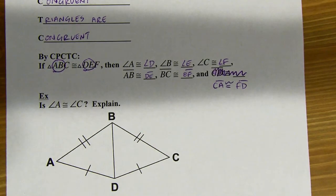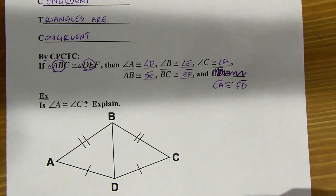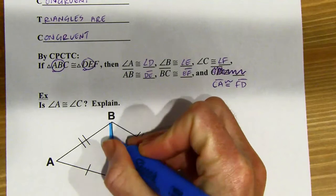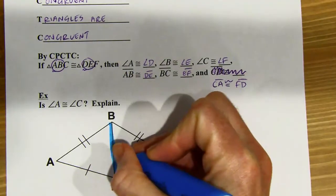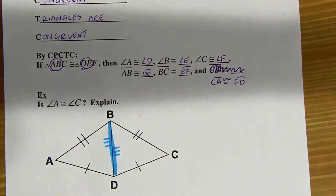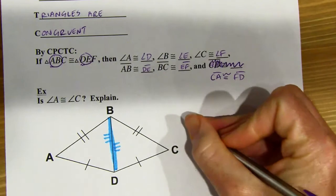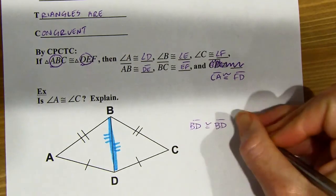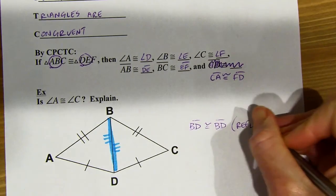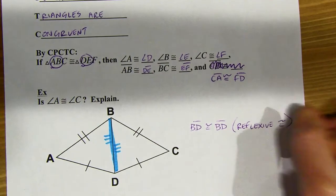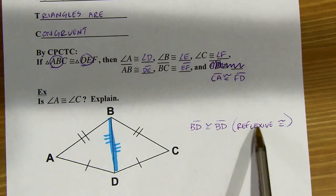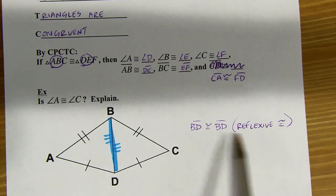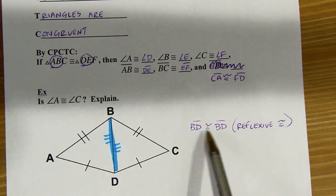Let's see what we can do. I'm thinking about my triangle congruency theorems. I've got two sets of sides that are congruent, but that's not enough — I'm going to need something else, a side or an angle, to get these congruent. What I can do is use BD. It's part of both triangles and it's going to be congruent to itself. So I'm going to say that BD is congruent to itself. That's the reflexive property of congruency.